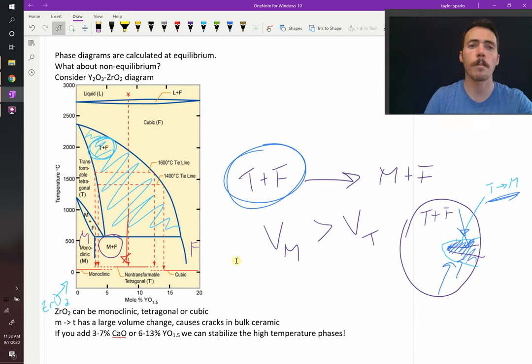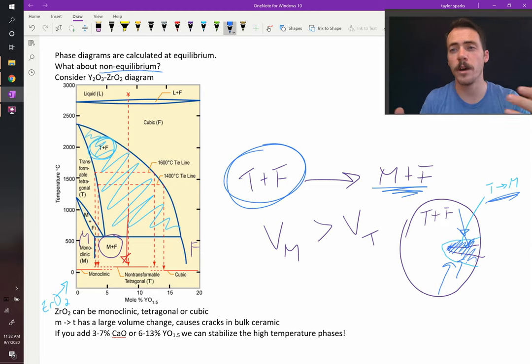But that's an example of a non-equilibrium. This is non-equilibrium because equilibrium says you should be in this phase, but in practice, you can get it to stay in this metastable phase until something like a crack comes along and gives it a reason to switch to the other phase.